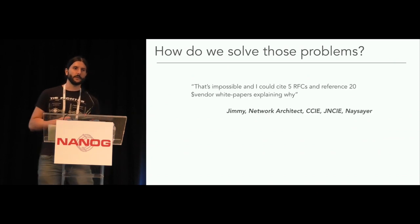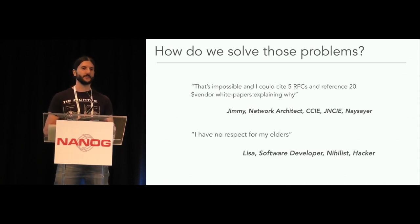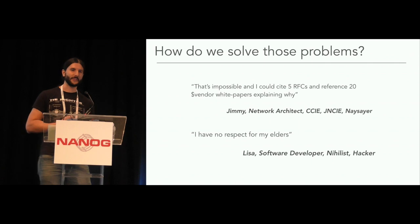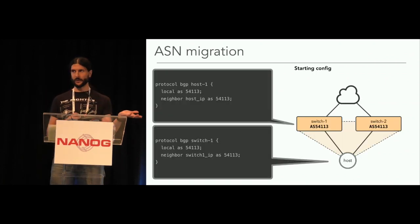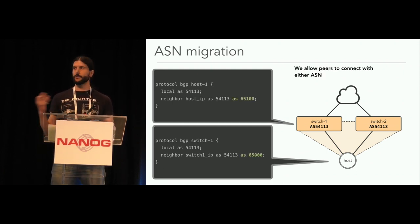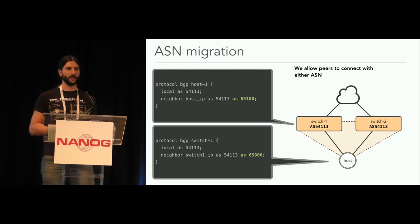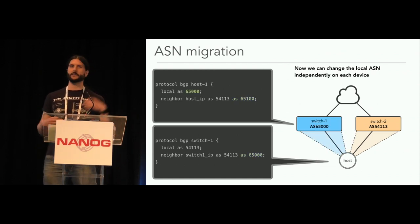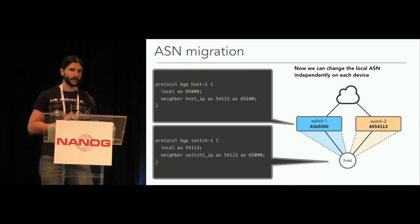How do you solve these problems? If you ask a traditional network architect, you basically can't. However, we have software engineers and we take RFCs with a pinch of salt, so we hacked our way into this migration. The first problem is the ASN migration — actually easy to solve. We came up with a 'secondary AS' keyword that says: if my neighbor is coming with either this or this AS, just accept it. So I can just flip the local AS on one of the sites and the migration is done — I don't need to synchronize multiple devices at the same time, just one change at a time.